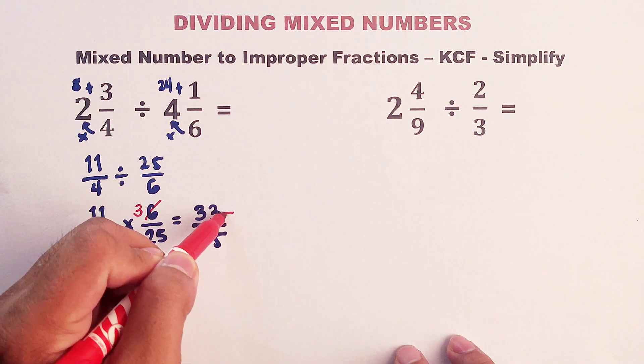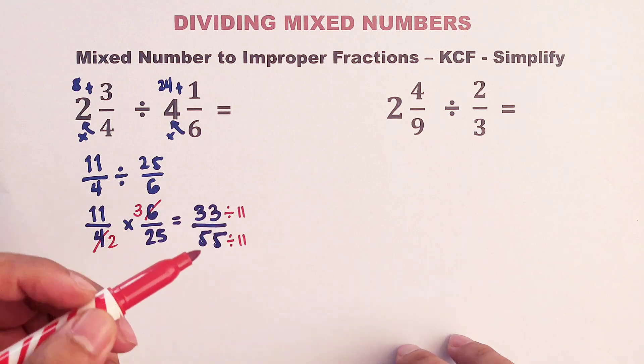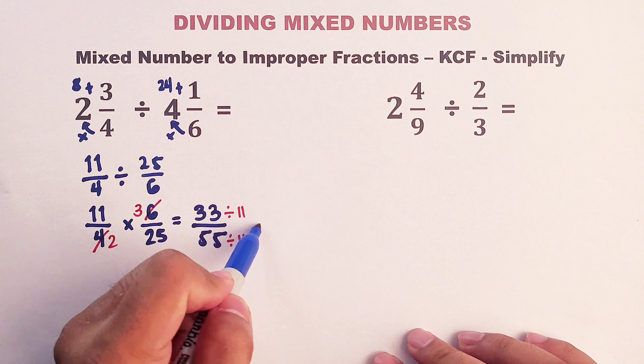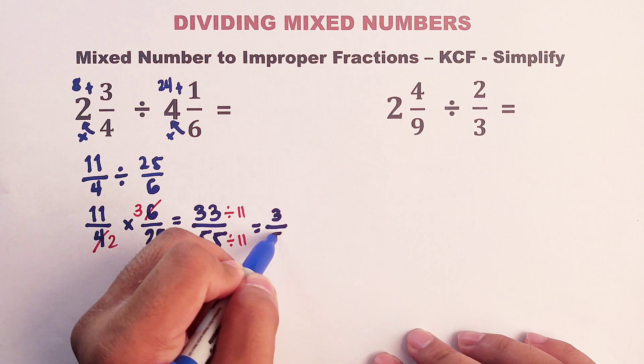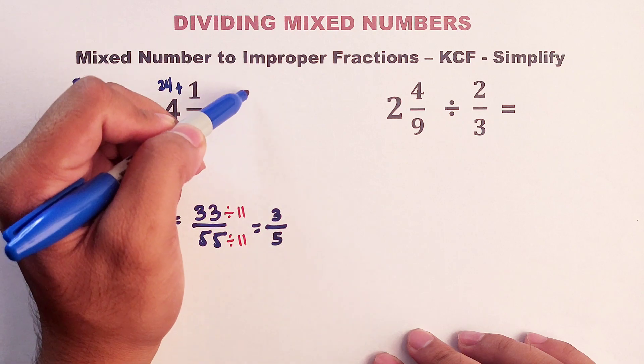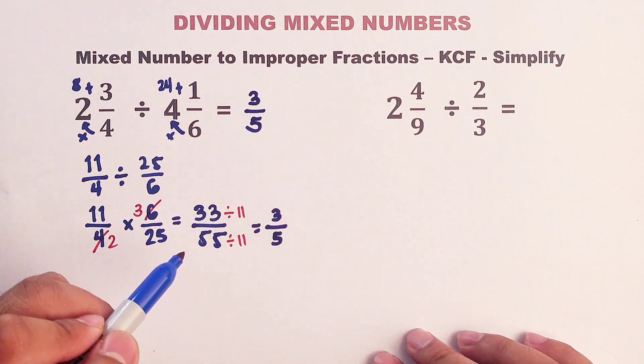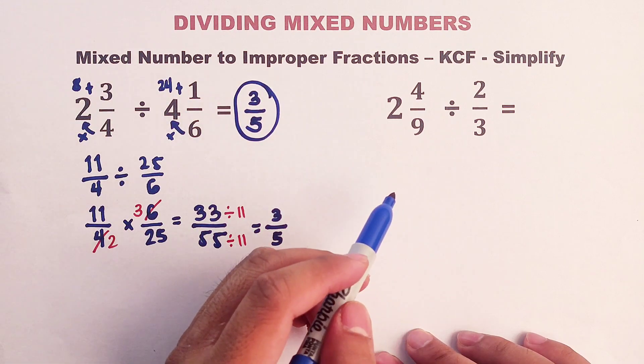And as you can see, we have here 33 over 55. And this 33 over 55 can be simplified. I think we can divide the numerator and the denominator by 11. And now this 33 divided by 11 is simply 3. And your 55 divided by 11 is 5. And the final answer is simply 3 over 5. This is the correct answer. Now let's proceed with item number 2.